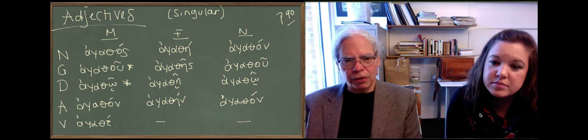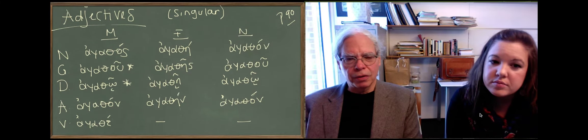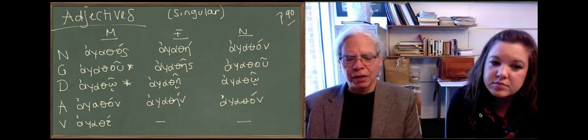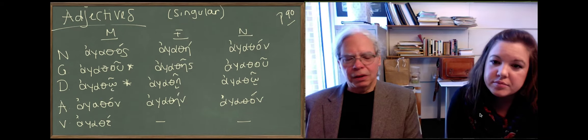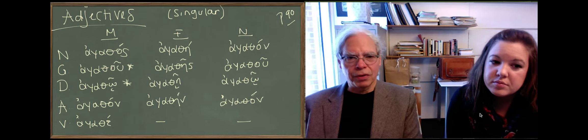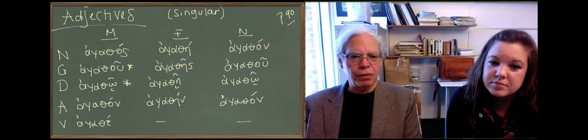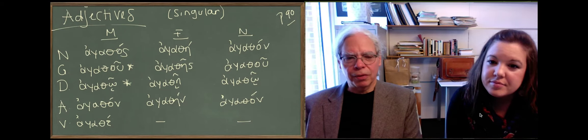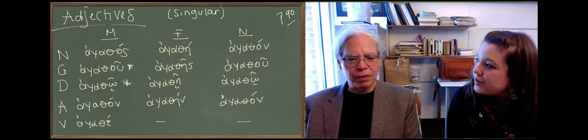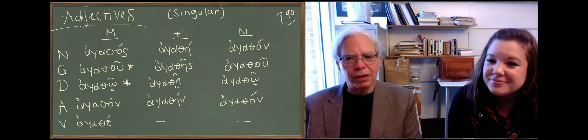So if you look at the feminine of Agathos, it's Agathé, Agathés, Agathé, Agathén, that's the same as tekne, teknes, tekne, teknein. And the neuter of Agathos is Agathón, Agathú, Agathó, Agathón, which is exactly like the inflection of Dorón or the standard neuter noun that we use, Ergon, the word for deed.